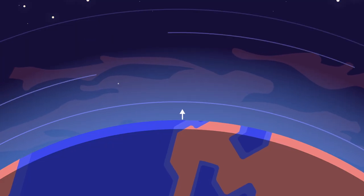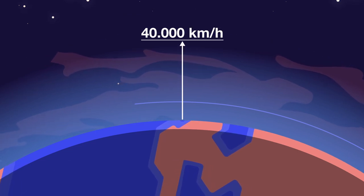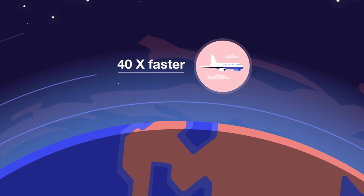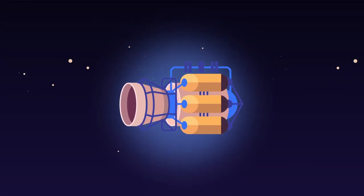You need to jump 40,000 km per hour to leave Earth. That's 40 times faster than a jumbo jet. To go that fast, you need special engines. Rocket engines.